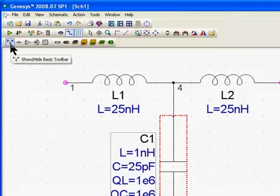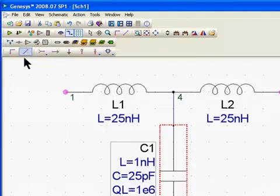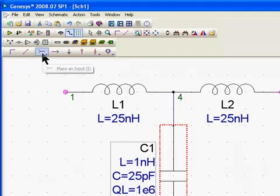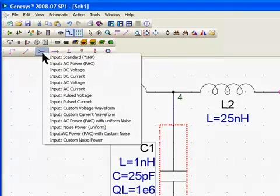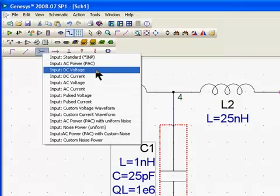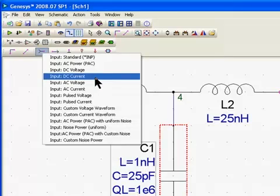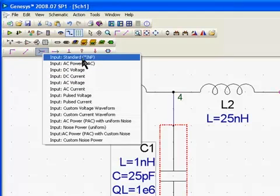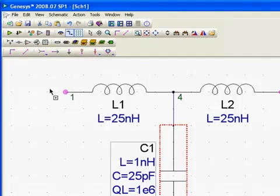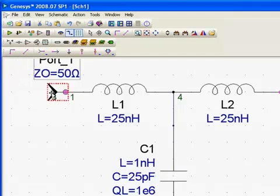I need the basic toolbar and that has my inputs, outputs, and so forth. If I click on the input, we have a number of inputs for both linear and non-linear simulations. There's power, voltage, current, but all I need is a standard input, which is a 50 ohm inductance input.